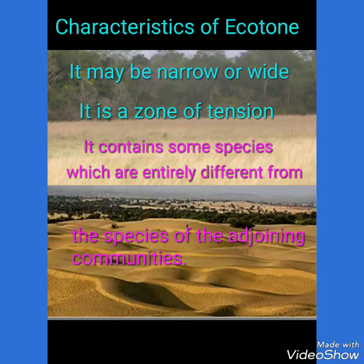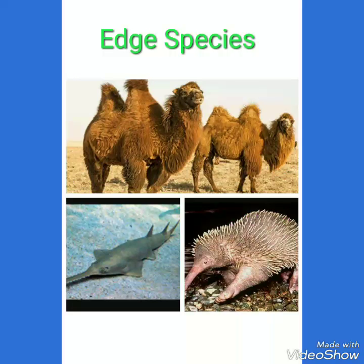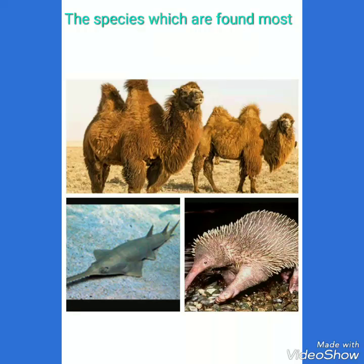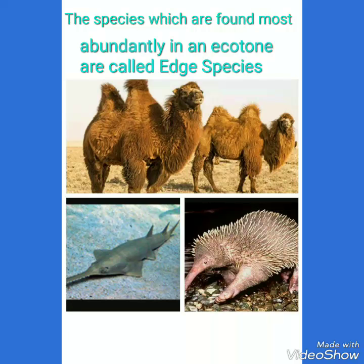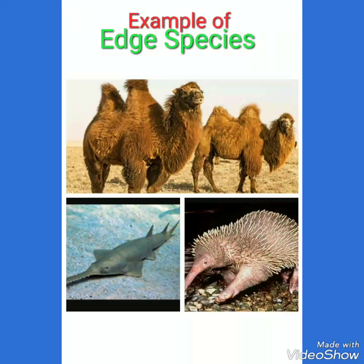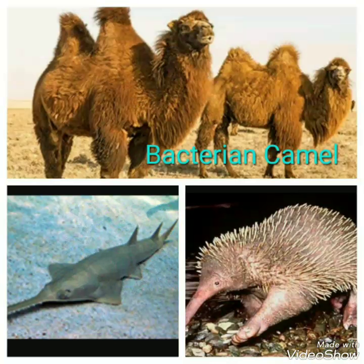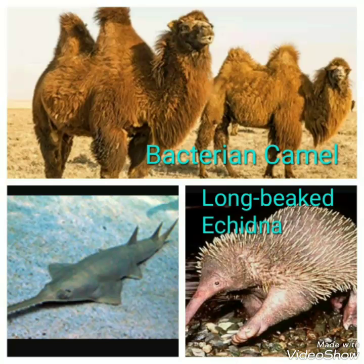My next topic is edge species. The species which are found most abundantly in an ecotone are called edge species. An example is the Bactrian camel, which is found in the steppes — the grassland of north and east Asia — the place between the desert and the forest.